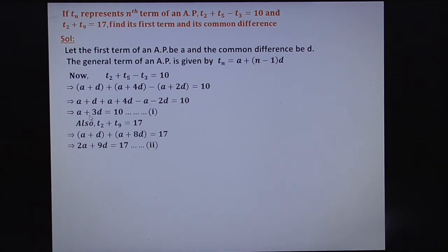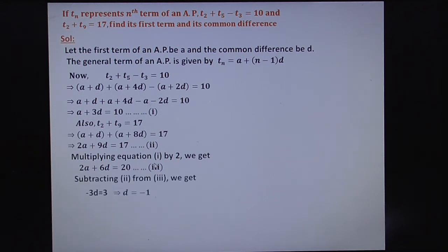I am multiplying the first equation by 2. You get 2A plus 3 times 2, 6D, plus 2 times 10 equals 20. Now solve equations 2 and 3. Simply subtract.